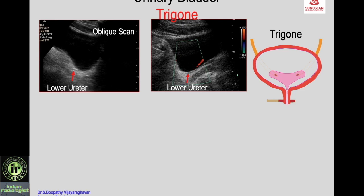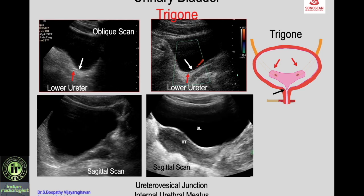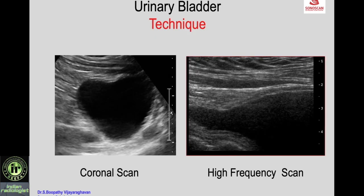Coming to the trigone of the urinary bladder: the trigone is the triangular part of the base of the urinary bladder between the ureterovesical junctions on both sides and the internal urethral meatus. This triangular area has special tissue and special embryological origin. To identify the trigone, you identify the internal urethral meatus and the two ureterovesical junctions — the triangular area between them is the trigone.